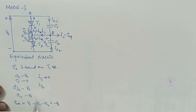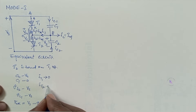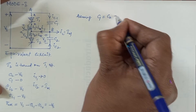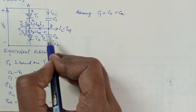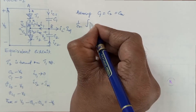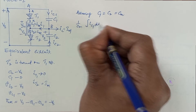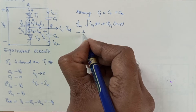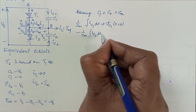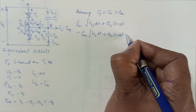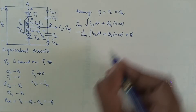IT2 rises to the level of instantaneous load current IM. Assuming C1 equals C2 equals CM, for the loop formed by Vs, C1, C2 and minus Vs: (1/CM)∫IC1 dt + Vc1(0) plus (1/CM)∫IC2 dt + Vc2(0) equals Vs — let this be equation 1.